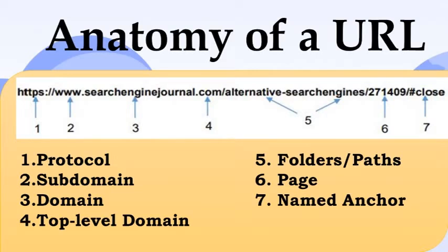Next is the subdomain. A subdomain is a subdivision of the main domain. For example, mail.doughfood.com and calendar.doughfood.com are subdomains of the domain name doughfood.com. A domain name is a unique reference that identifies a website on the internet — for example, searchenginejournal.com. A domain name always includes the top-level domain, which in searchenginejournal.com's case is .com.